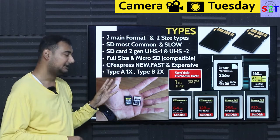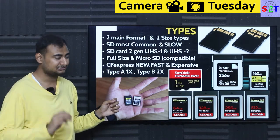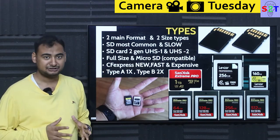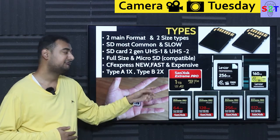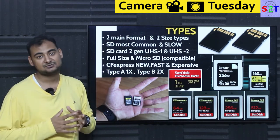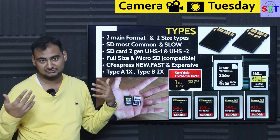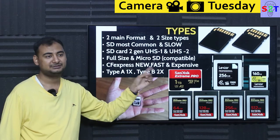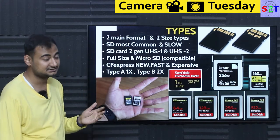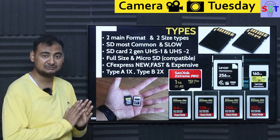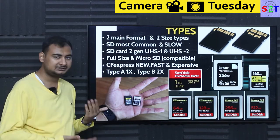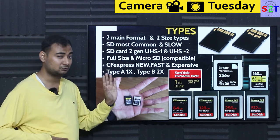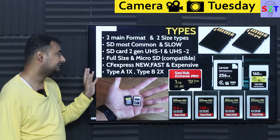SD cards generally come in two sizes now — full size and micro SD. Because of developments in flash memory, micro SD cards now have almost the same performance as full-size ones. If you bought the highest-end card for your GoPro, you can put it in a card reader and use it in your DSLR or mirrorless and get comparably good performance. It's not your first option, but in an emergency it could work, because current micro SD cards are really fast.